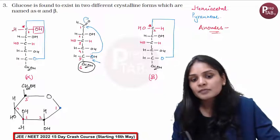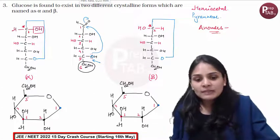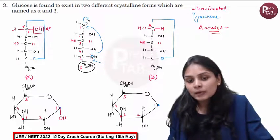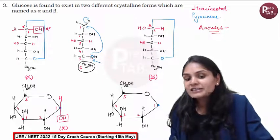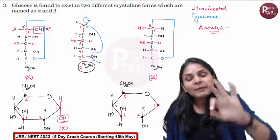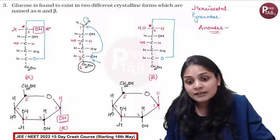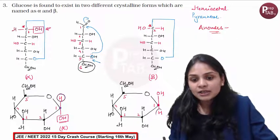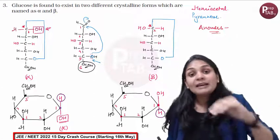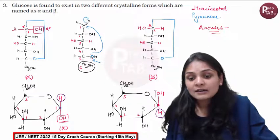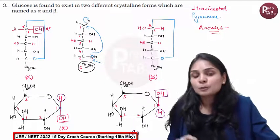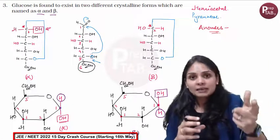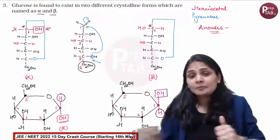Now for alpha and beta cyclic forms: in alpha form, OH at C1 is on the right side, so draw it down. This is the alpha form. For beta, the configuration at this carbon changes — OH goes up and hydrogen goes down. This is the aldehyde group which has become a hemiacetal. These are the alpha and beta cyclic forms of glucose, in which the aldehyde group becomes a hemiacetal — that's why aldehyde tests don't work.